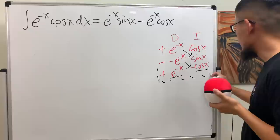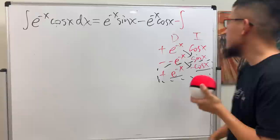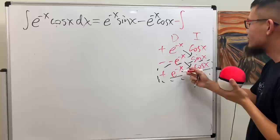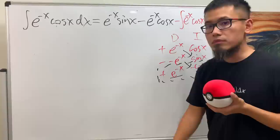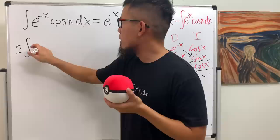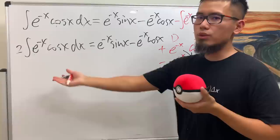The product of that last row is still inside an integral, and it's a negative integral. So the integral of e to the negative x cosine x dx equals e to the negative x sine x minus e to the negative x cosine x, and then we have a negative integral of e to the negative x cosine x dx on the right side.